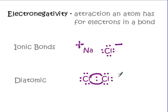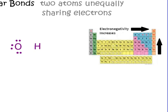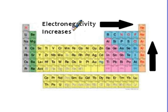Now let's split the difference. We've looked at one atom completely stealing electrons, and two atoms holding on with equal strength. What happens when one pulls on electrons with just a little more force than the other? That results in a polar bond. A polar bond is when two atoms are still sharing electrons and still have a merged orbital, but one atom pulls the electrons a little closer to itself. Electronegativity increases going right and going up on the periodic table, so the upper-right corner is where the strongest pulling takes place.